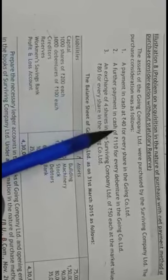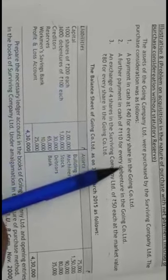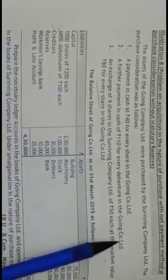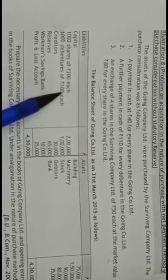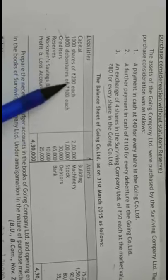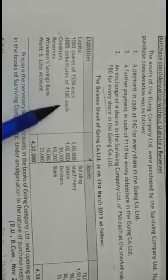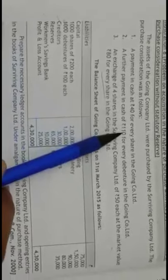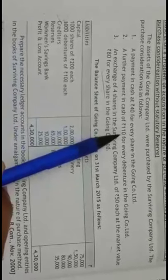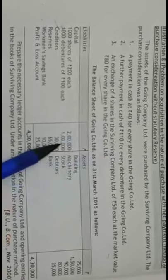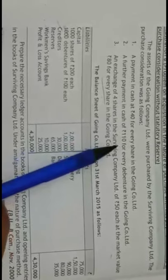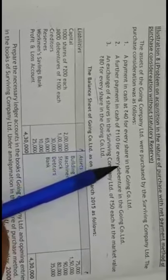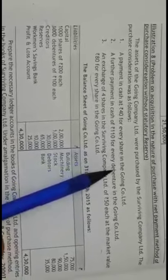A further payment in cash of Rs.110 for every debenture in Going Company Limited. Looking at the balance sheet, there are 1,000 debentures of Rs.100 each, so the value is Rs.1 lakh. But it is paid at Rs.110, which means it is paid at a premium of Rs.10. This adjustment will appear in the opening entries in the books of the transferee company.